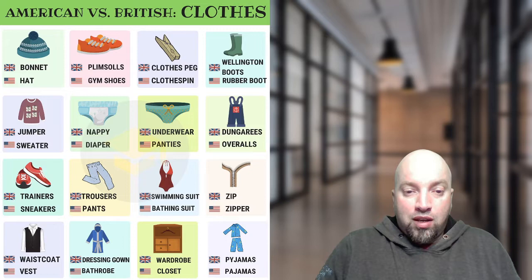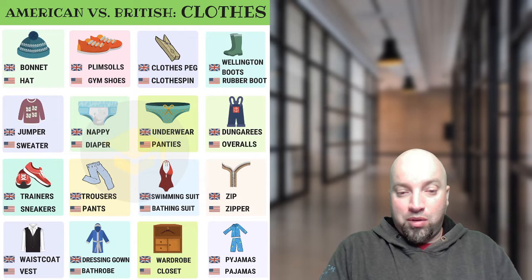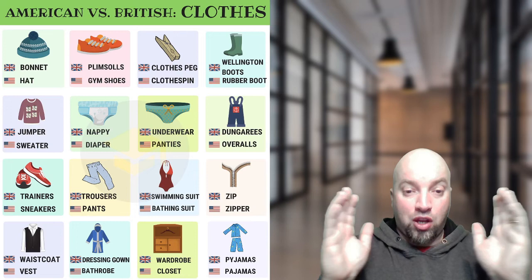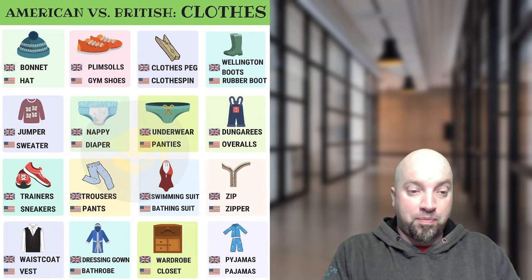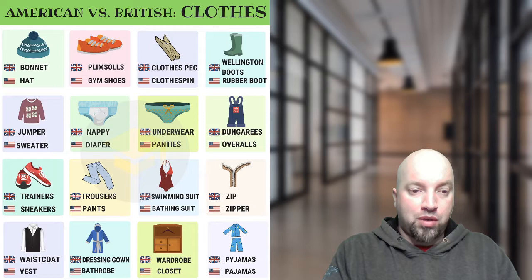The next one is 'swimming suit' and 'bathing suit' — in Canada we would probably just say 'swimsuit,' not 'swimming suit.' Bob, if you're still here, let me know if they say it differently in Ontario, because Canada is a very large country so we might say things differently in different parts. Next one is 'zip' and 'zipper' — we would go along with the American style and say 'zipper' in Canada.